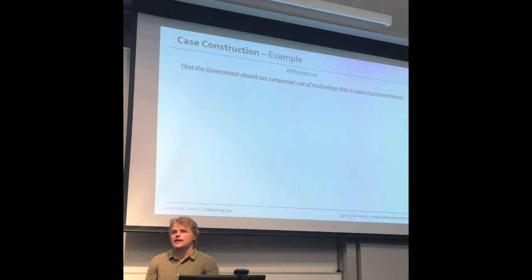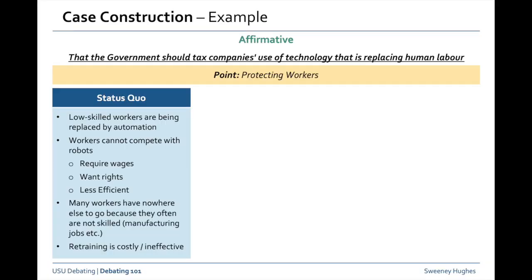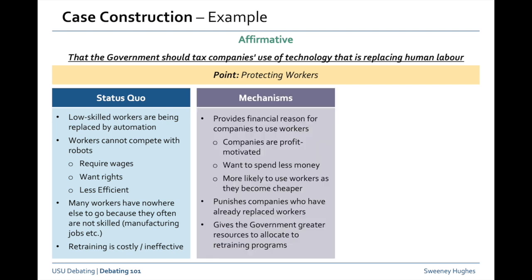An example: if we're the affirmative team on the topic 'the government should tax companies' use of technology that is replacing human labour' — one of your key points might be 'this protects workers.' The status quo then would be that low-skilled workers are being replaced by automation, workers can't compete with robots due to factors such as requiring wages, wanting rights, and being less efficient. Those workers then have nowhere else to go because they are often not skilled and retraining is costly and often quite ineffective.